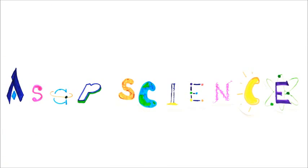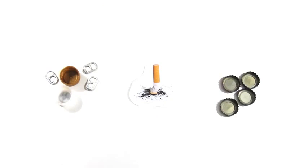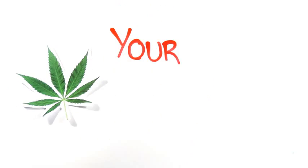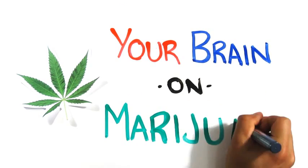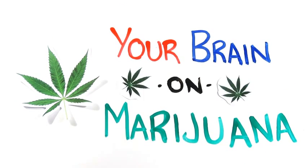For centuries, humans have been using substances to alter their state of mind, from caffeine, cigarettes and alcohol, to more extreme drugs. But as the most commonly used illicit drug in North America, where does marijuana fit in, and how exactly does it affect your brain?